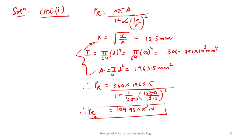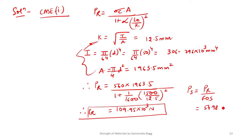We need to calculate the safe load, not PR. The formula is safe load = PR / FOS. With FOS = 2, the safe load is 54.98 into 10³ N, or approximately 54.98 kN. This is the answer for Case 1.